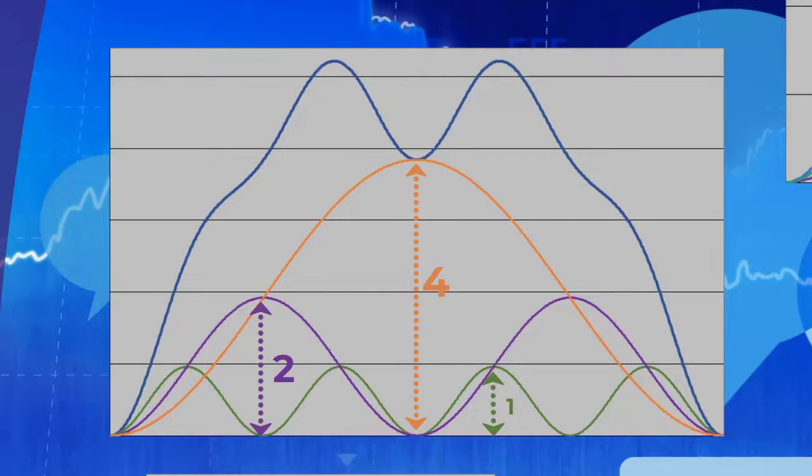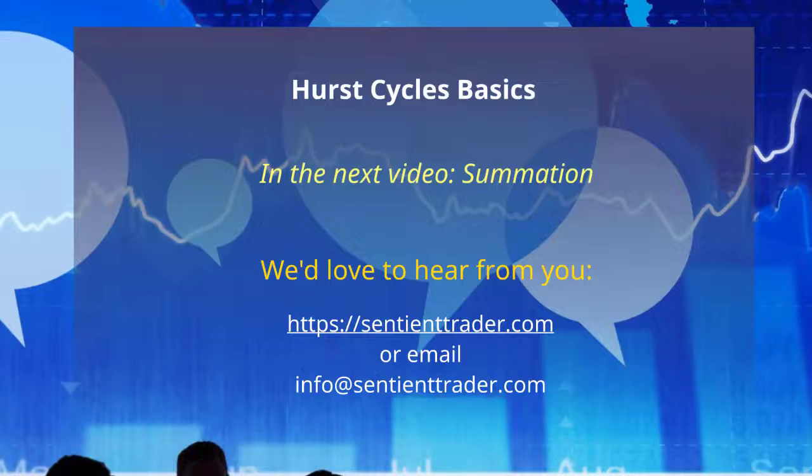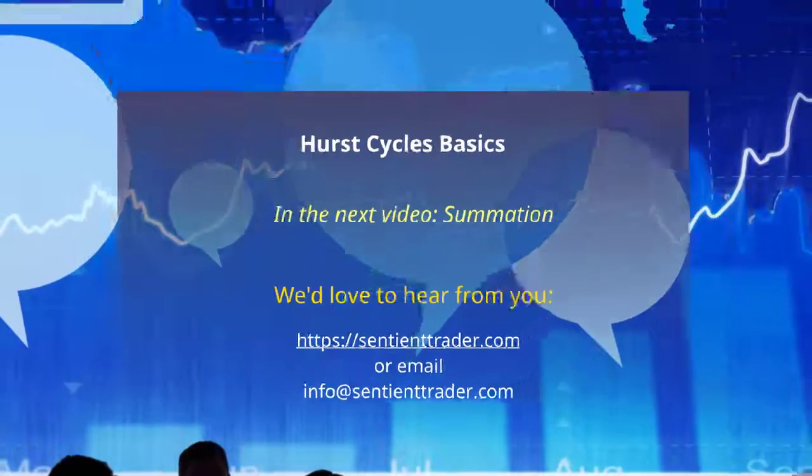You will notice something else about this diagram which is that the orange cycle has twice the amplitude of the purple cycle. That is something we're going to be coming to in our next video when we are going to start speaking about the way in which we combine these cycles and we will introduce the principle of summation.